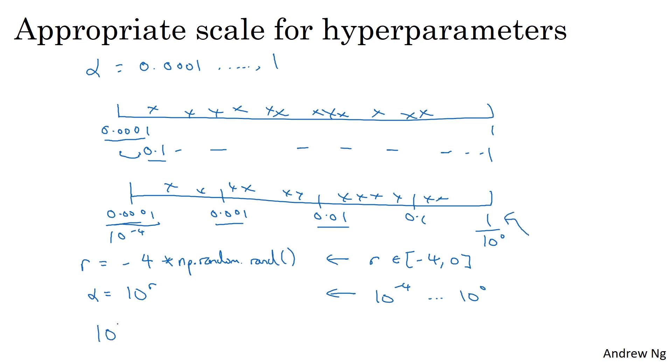In a more general case, if you're trying to sample between 10 to the a to 10 to the b on the log scale, and in this example, this is 10 to the a, and you can figure out what a is by taking the log base 10 of 0.0001. It's going to tell you a is negative 4. And this value on the right, this is 10 to the b. And you can figure out what b is by taking log base 10 of 1, which tells you b is equal to 0. So what you do is then sample r uniformly at random between a and b. So in this case, r would be between minus 4 and 0. And you can set alpha or your randomly sampled hyperparameter value as 10 to the r.